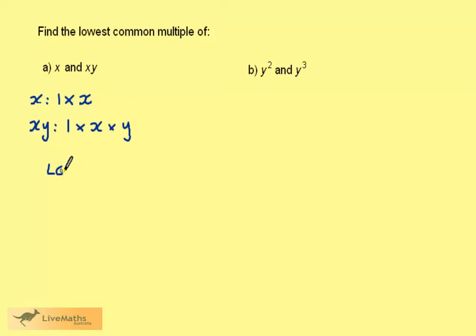If we start with xy, the lowest common multiple is 1 times x times y. Now we need to look at the x, and we already have both parts, so we don't need to add anything from here. So the lowest common multiple is 1 times x times y, which is xy.